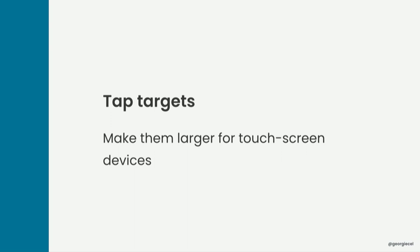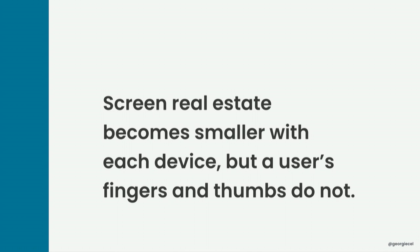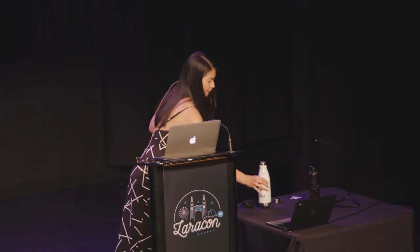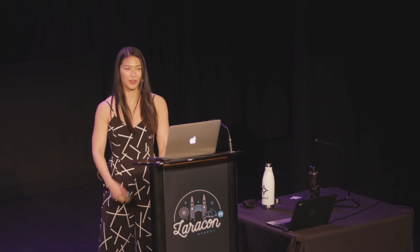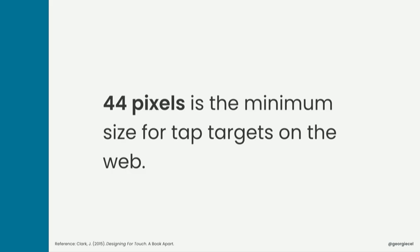Many people use their smartphones for long periods, scrolling and navigating with their hands. We need to make tap targets large enough so people can navigate a website easily. Smartphones have much smaller screens than computers, and fingers are much bigger and not likely to have the same precision as a mouse pointer. Screen real estate becomes smaller with each device, but a user's fingers and thumbs do not. Bigger is better for tap targets — this includes hyperlinks, logos, hyperlinked images, and other interactive elements. The recommendation is 44 pixels minimum for tap targets on the web.